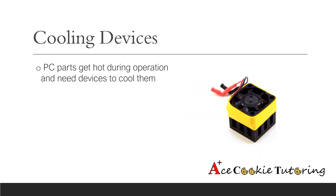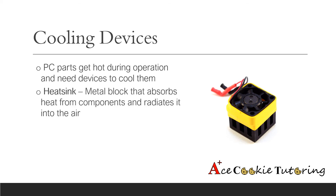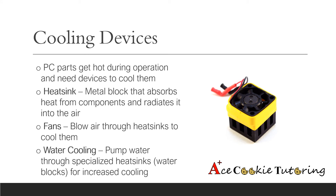Last but not least, we have our cooling devices. PC parts, especially the CPU and the GPU, can get hot during operation. They consume a lot of energy and need specialized devices to keep them cool. The first such device is a heat sink — a metal block that absorbs heat from components and radiates it into the air using metal fins. We usually attach a fan to it, which blows air through the fins to cool it quickly. For really hot components, we can go to water cooling, where specialized heat sinks called water blocks have water pumped through them, absorbing heat much quicker than air does with a regular heat sink.